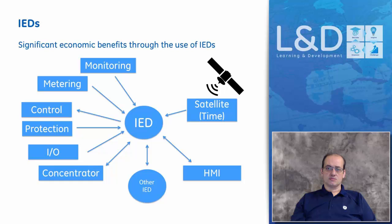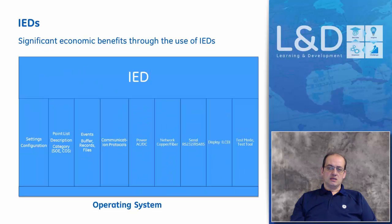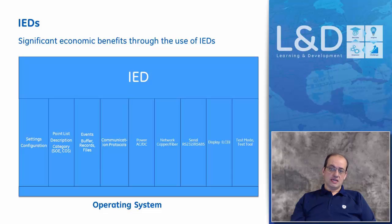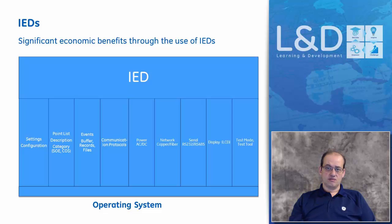Inside the IED there will be many interfaces: settings and configuration, point lists, events, and various communication protocols supported. Of course there is the power interface, which could be AC, DC, or both. The network communication interface could be copper, fiber, or both. There is also serial communication — a more legacy form that still exists in power systems and substations today, including RS-232 and RS-485.